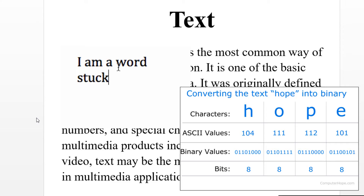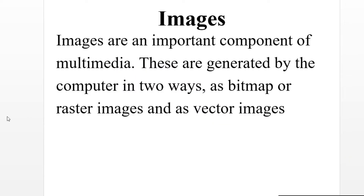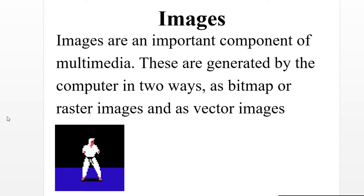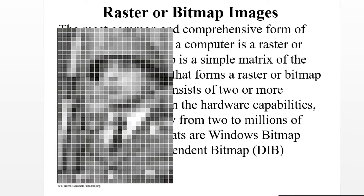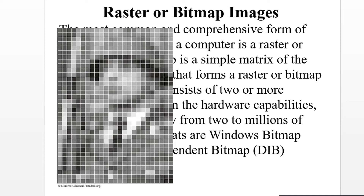Images are an important component of Multimedia. They are generated by the computer in two ways: as a bitmap or raster image, and as a vector image. Raster or Bitmap images are the most common and comprehensive form of storage for images on a computer. A bitmap is a single matrix of tiny dots called pixels that form a raster or bitmap image.